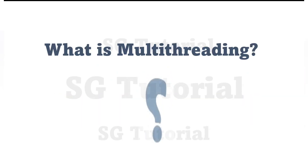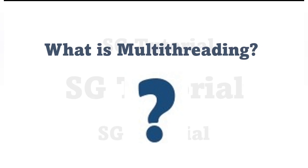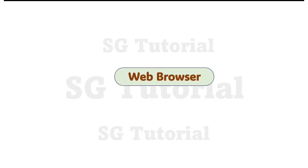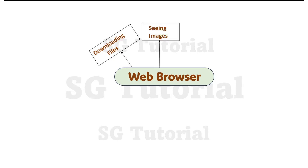First, let's understand what multi-threading is. I've explained it in a previous video but I'll explain it once more here. Using a web browser as an example — Chrome is one popular web browser. Using a web browser we can do multiple tasks simultaneously: we can download files (audio, video, or text), open another tab or web page to see images, and also search for required content by opening multiple web pages.